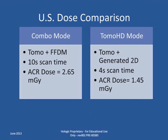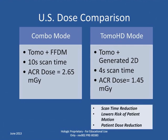Let's review the United States dose for combo mode, which is 2D FFDM plus tomosynthesis, with a 10-second total scan time consisting of four seconds for the tomosynthesis scan and six seconds for the 2D scan. The resulting dose is 2.65 milligrays, which is below the MQSA guidelines of 3 milligrays. With Tomo HD mode — tomosynthesis plus the generated 2D — there is only the tomosynthesis scan, which takes four seconds. By eliminating the traditional 2D exposure and generating the 2D from the tomosynthesis data, the total dose is 1.45 milligrays. With Tomo HD, the patient experiences a shorter compression time and a reduction in dose.